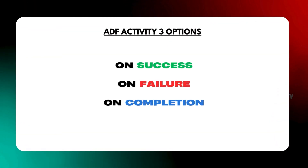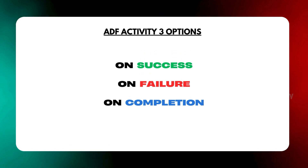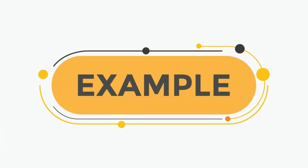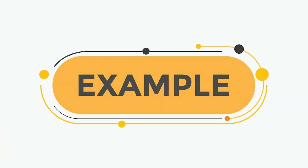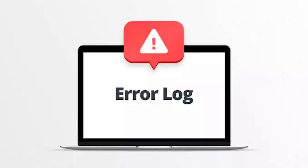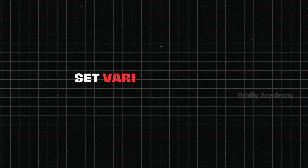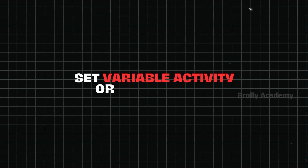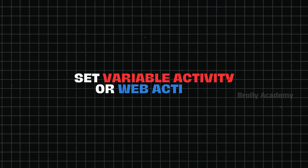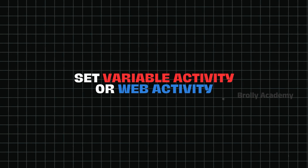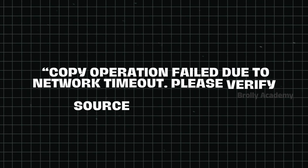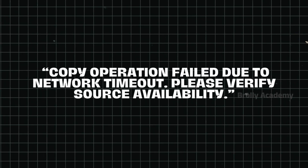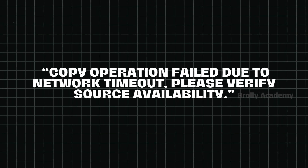In ADF there are three options: On Success, On Failure, and On Completion. For example, when a Copy Activity fails, you can prepare a log error message and capture the error in the failure path using Set Variable Activity and Web Activity. A sample error message: 'Copy operation failed due to network timeout. Please verify the source availability.'